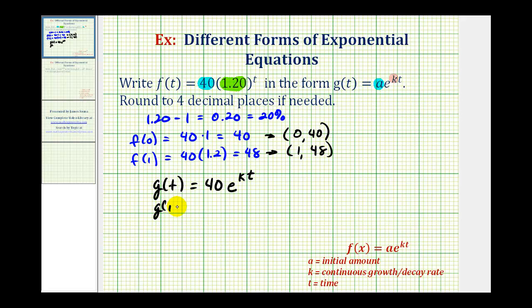So g(1) = 48. We have 40e^k = 48. We'll divide both sides by 40, so e^k = 1.2.